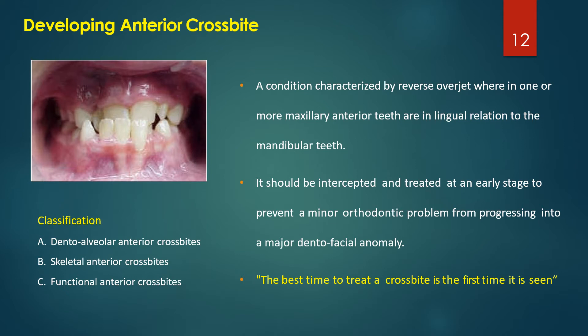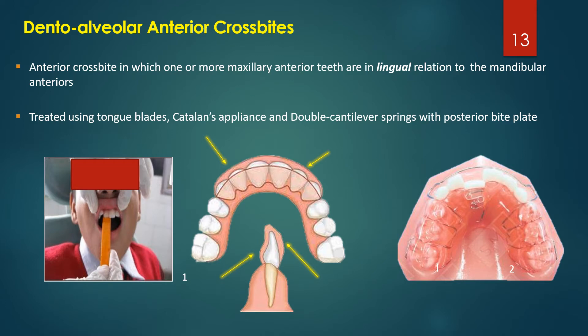The best time to treat a crossbite is the first time it is seen. Dental-alveolar anterior crossbites are those in which one or more maxillary anterior teeth are in lingual relation to the mandibular anteriors, and these can be easily treated using tongue blades, a Catalan's appliance, or a double cantilever spring with a posterior bite plate.